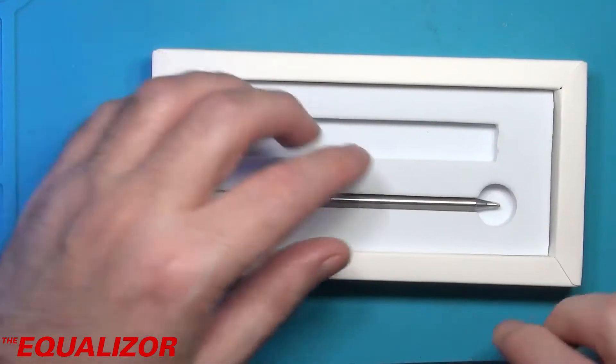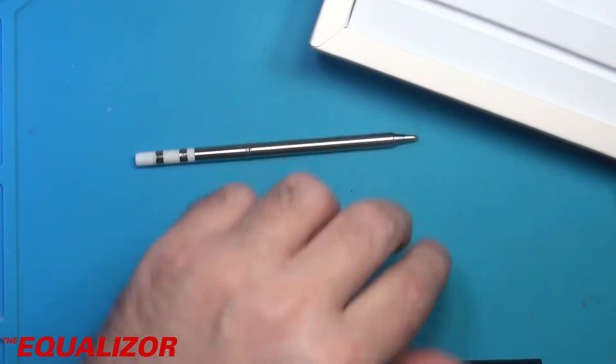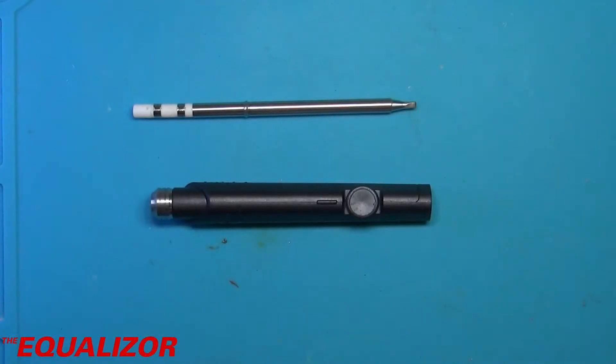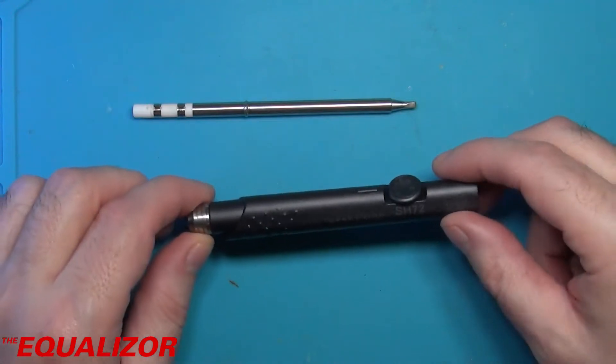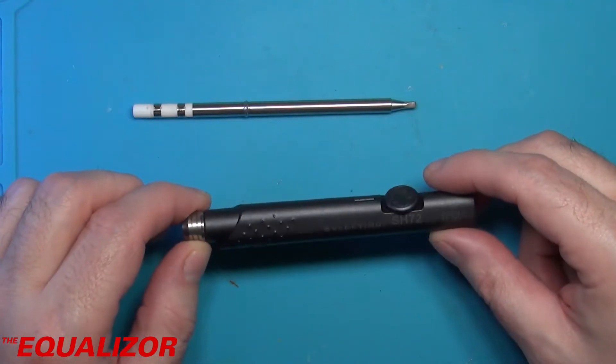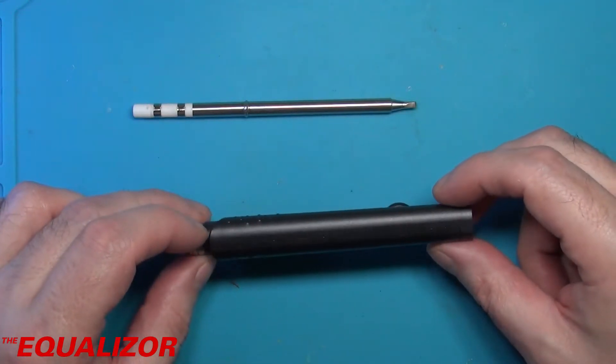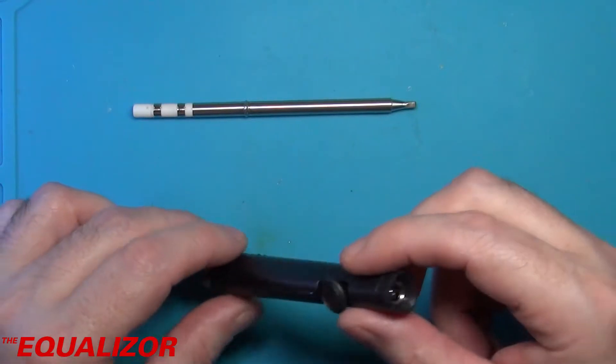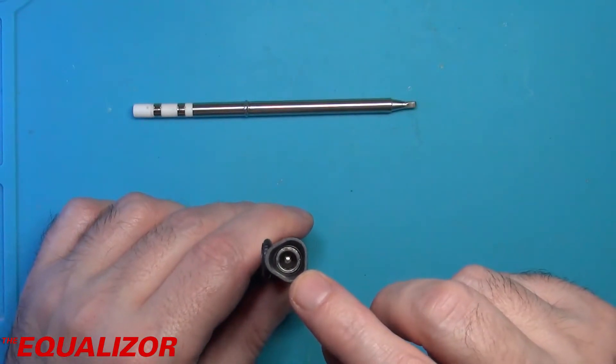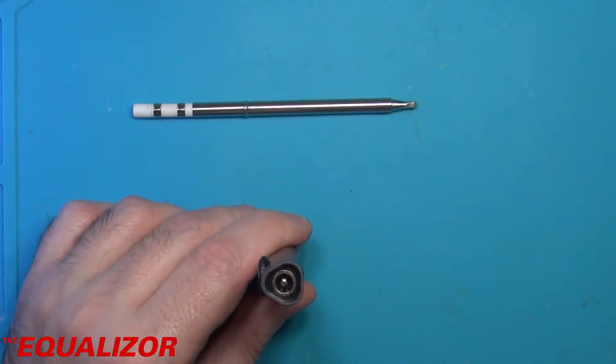You've got the soldering iron here, let's take that out. We've got the tip there, let's have that out. The body looks quite nice. I'm not sure what sort of plastic it is. It might tell us that when we take it apart, but we've got a DC socket on the end there which looks like a 2.5 by 5.5.